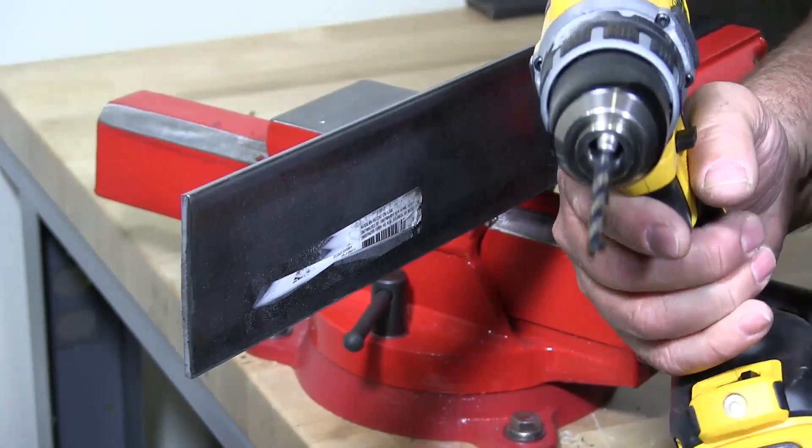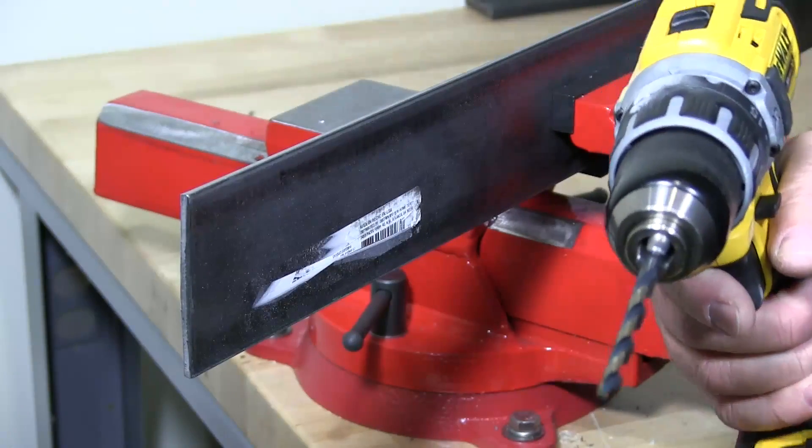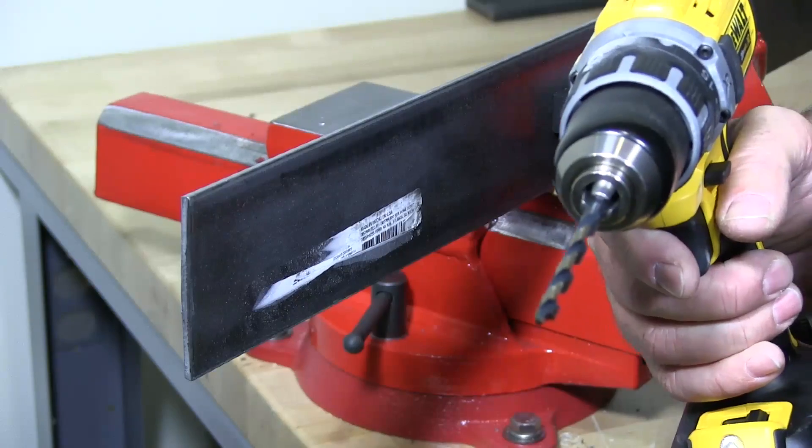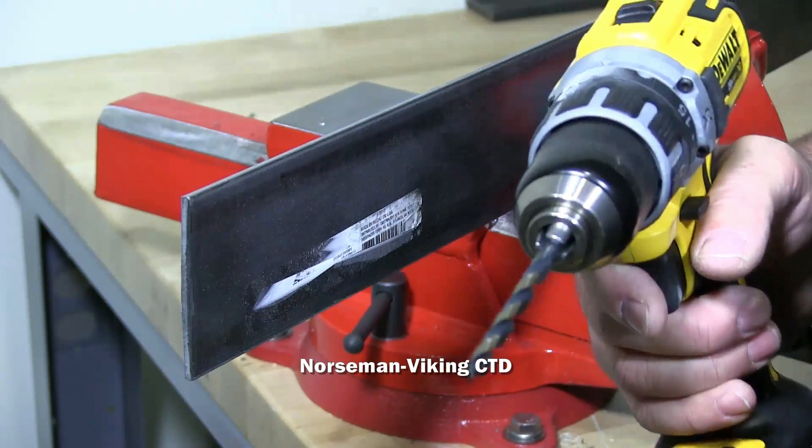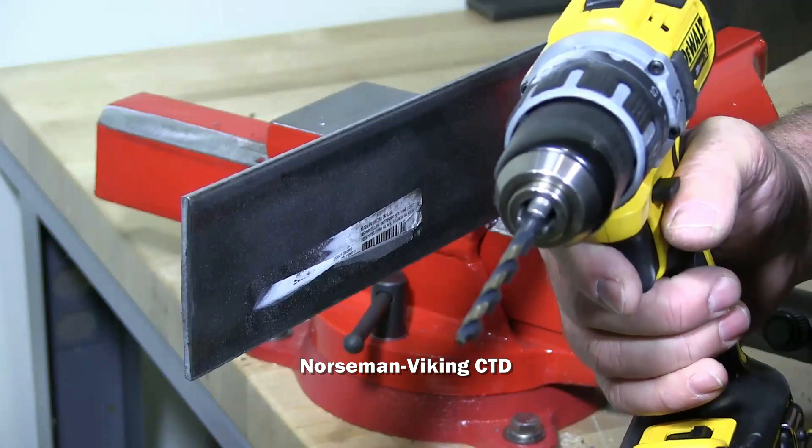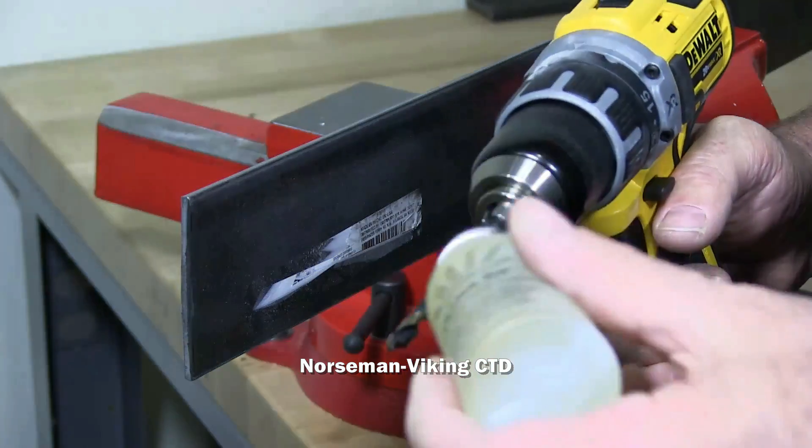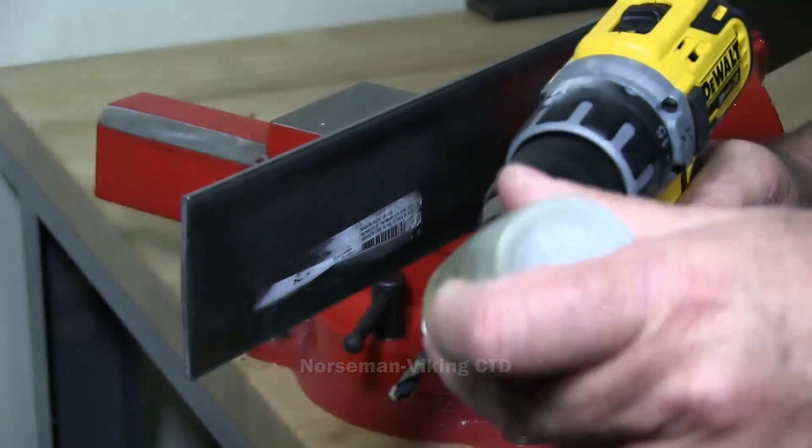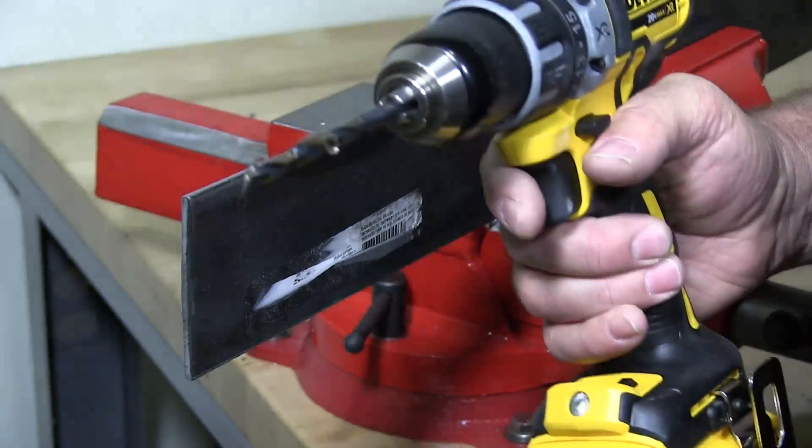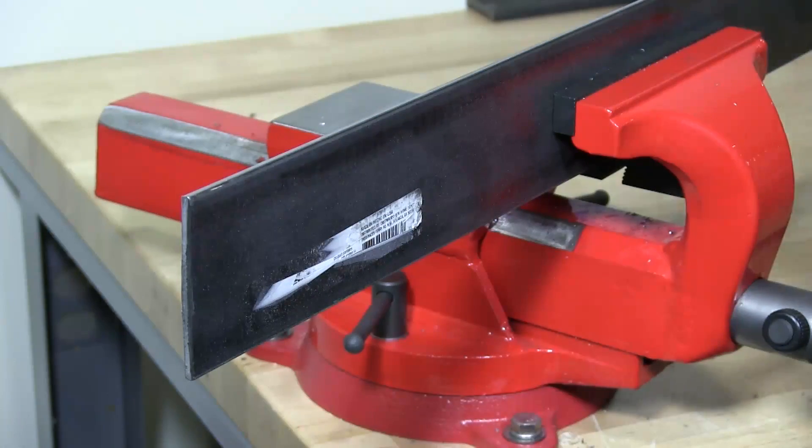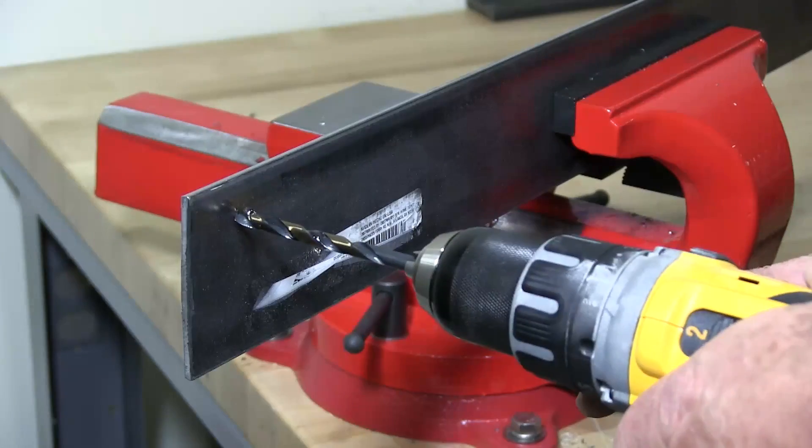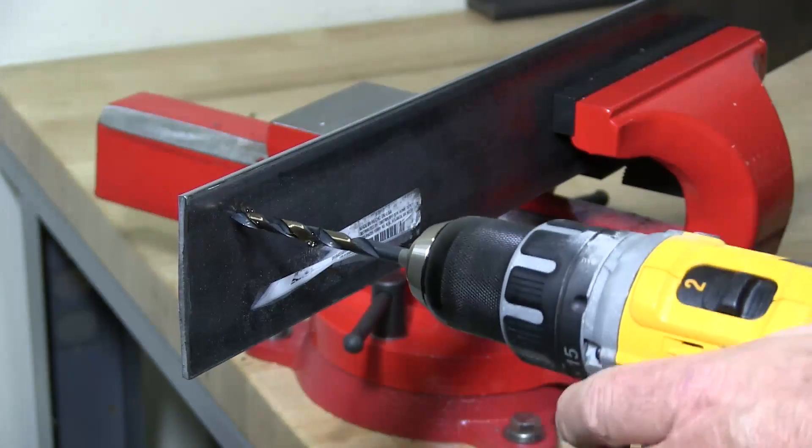So I have my Norseman, I have a quarter inch Norseman Viking steel bit here. It's a new bit, it's going to add some lubricant to it and I'm just going to drill some holes to demonstrate the installation of a structural rivet.